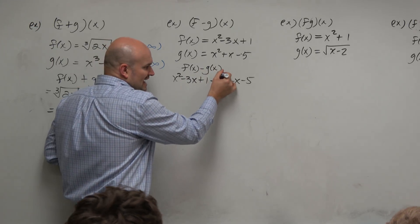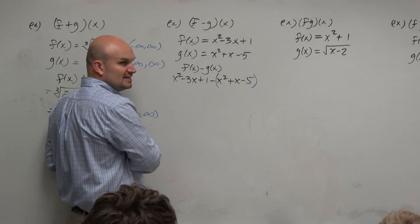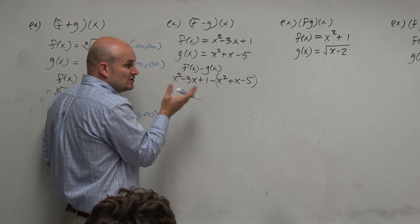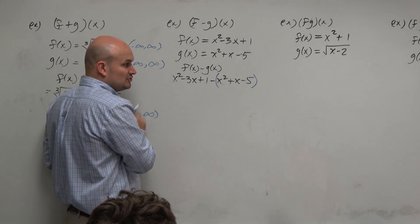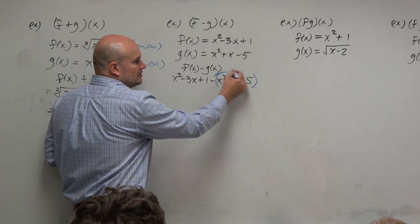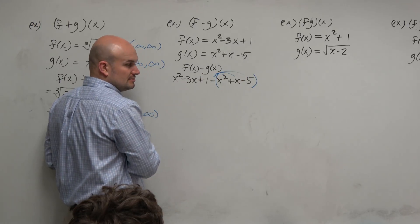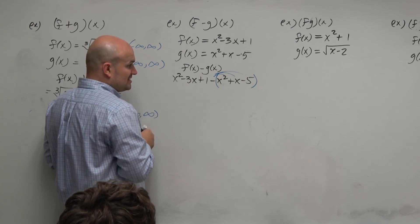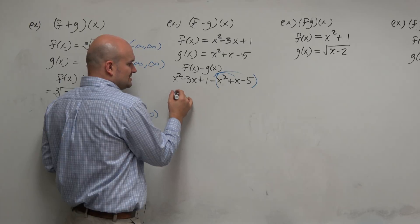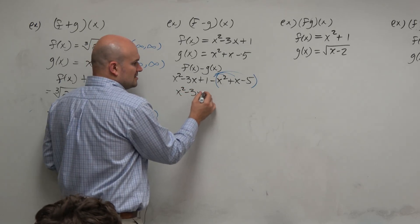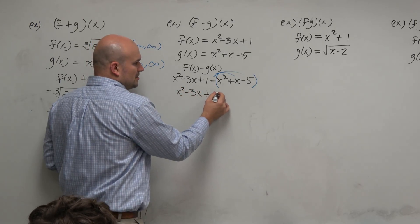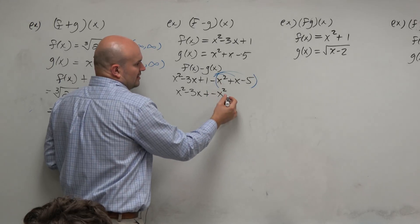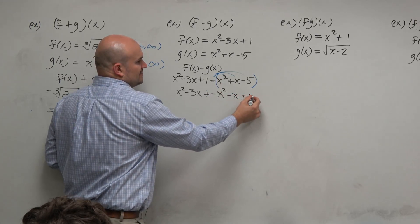g of x contains everything inside those parentheses. So what we have to do is insert this grouping symbol to make sure we remember to distribute. And basically what you're doing by distributing, you're changing the signs here. So you have x squared minus 3x plus 1 minus x squared, so plus a negative, minus x plus 5.